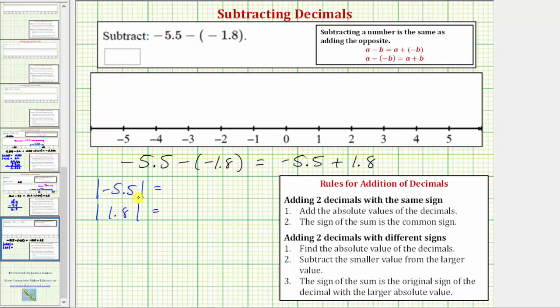So the absolute value of negative 5.5 is positive 5.5 and the absolute value of positive 1.8 is positive 1.8.